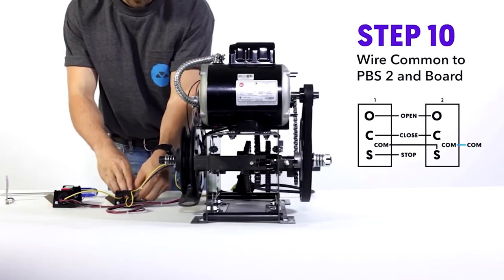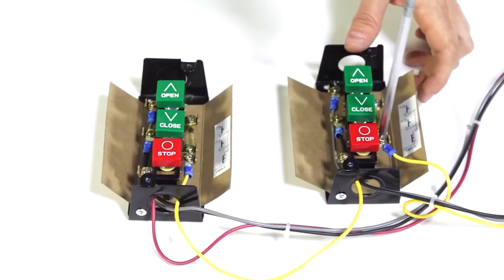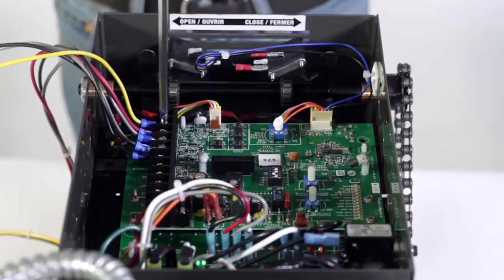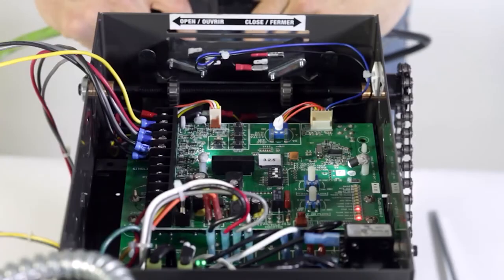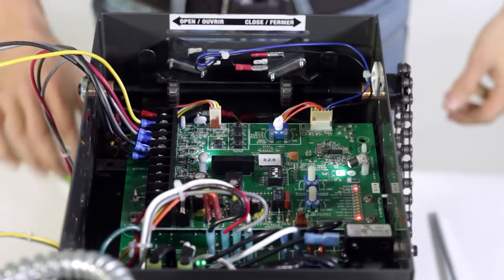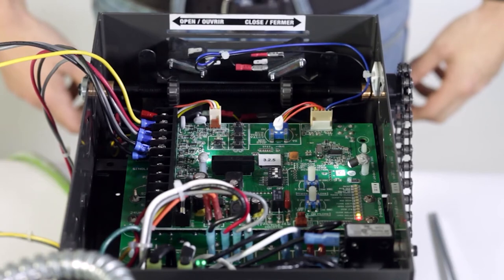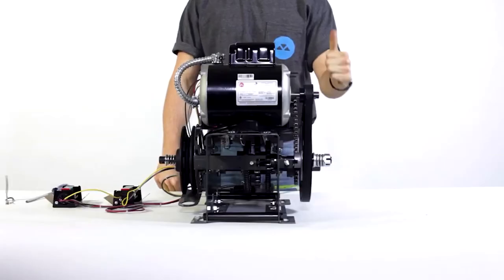And now for step ten, we're going to wire common on push-button two to common on the board. There you go. Step eleven, plug in your power. Watch the Christmas tree lights go up and down. And keep an eye out for the stop PB light. If it's red, you are gold.